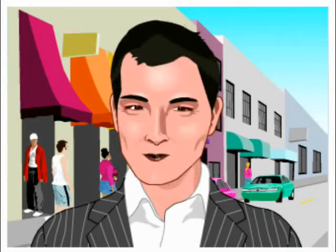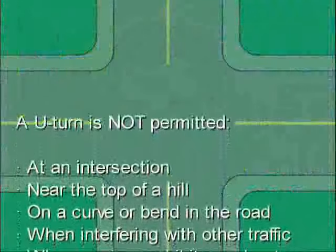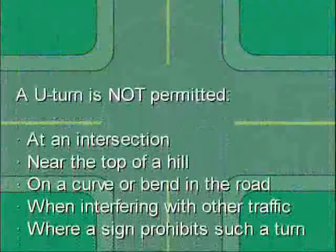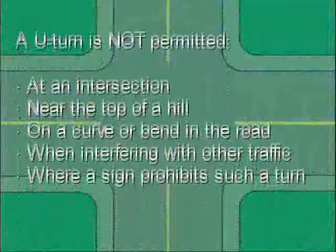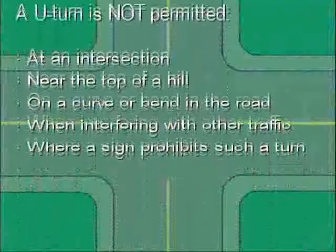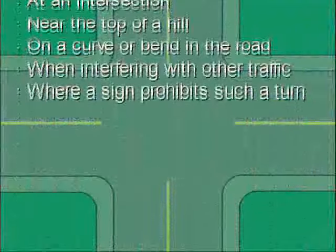A U-turn is not permitted in these conditions: at an intersection, near the top of a hill, on a curve or bend in the road, when interfering with other traffic, and where a sign prohibits such a turn.